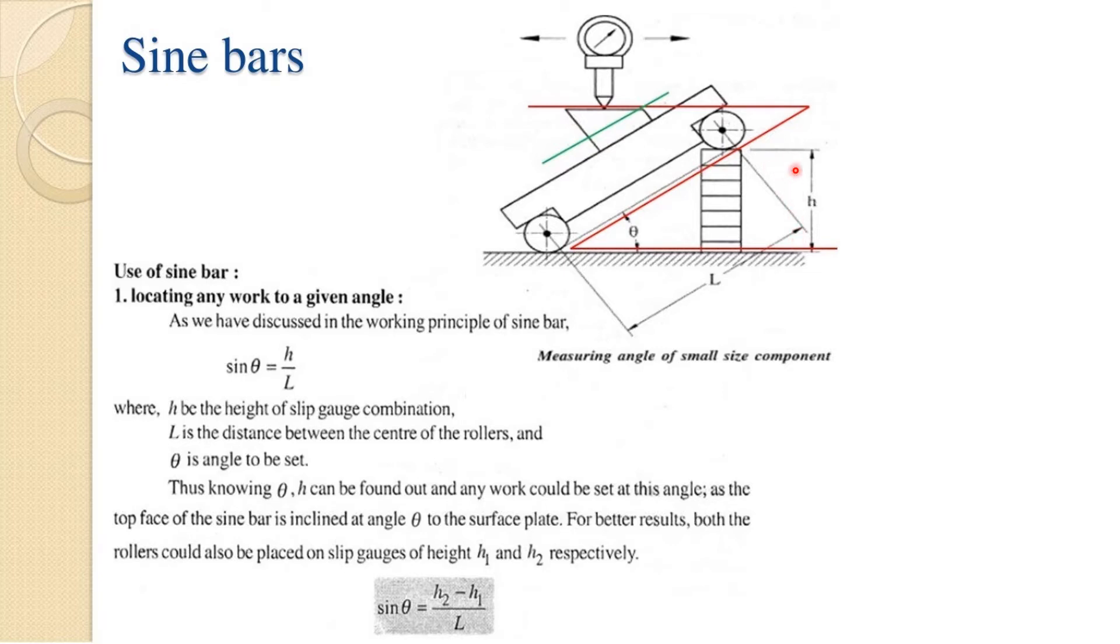Which is perpendicular, we can calculate from the slip gauge. If it is hypotenuse, we can calculate the value of center to center distance between the setting rollers. Sin theta is equal to h upon l. H is the height from slip gauge combinations. L is the distance between the center of rollers. So that's all from the principle of sine bar.